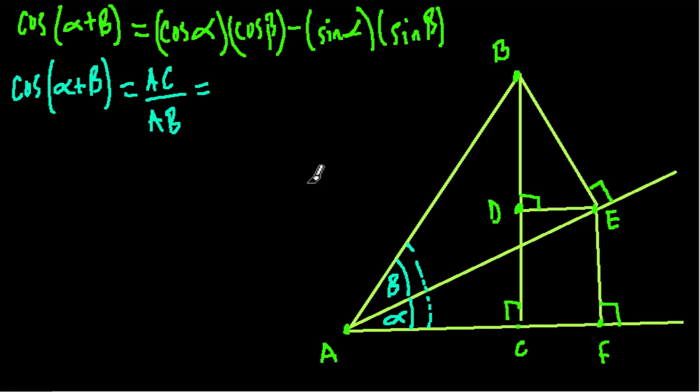Just like we did in the last proof, we can think about other ways of writing AC. We could write AF, this whole line segment over here, and then subtracting DE, just line segment DE. And that is all over AB. So AF minus DE, that is AC, we're just writing it in a different way.